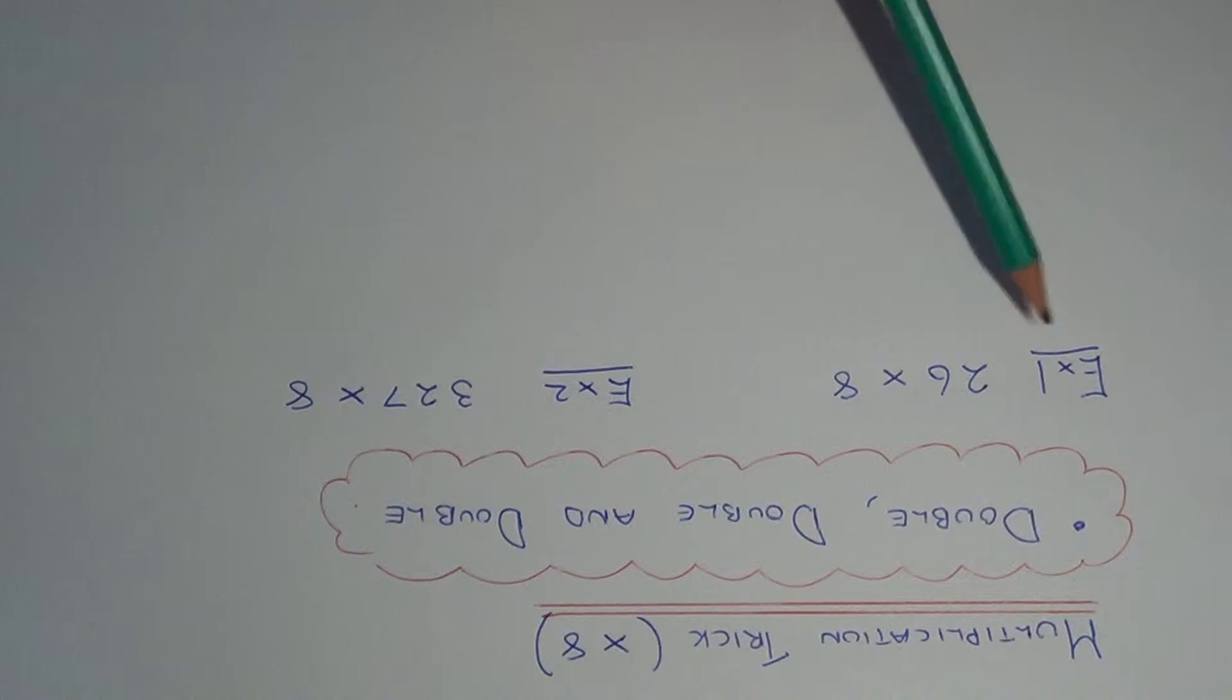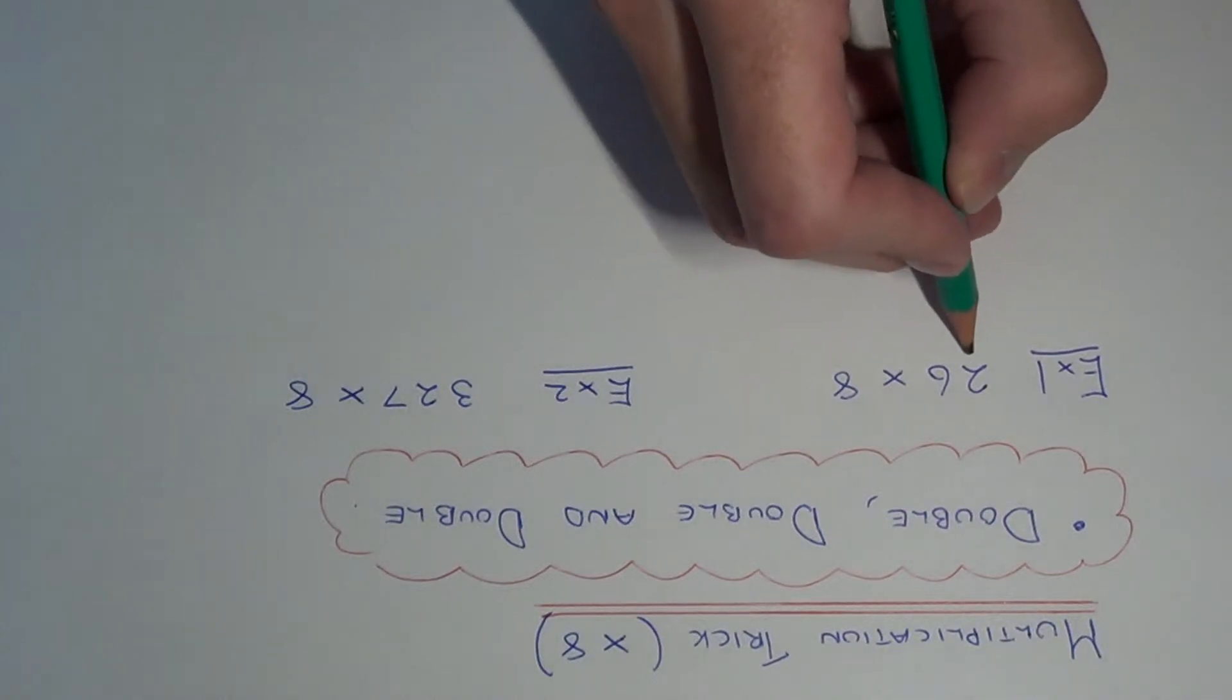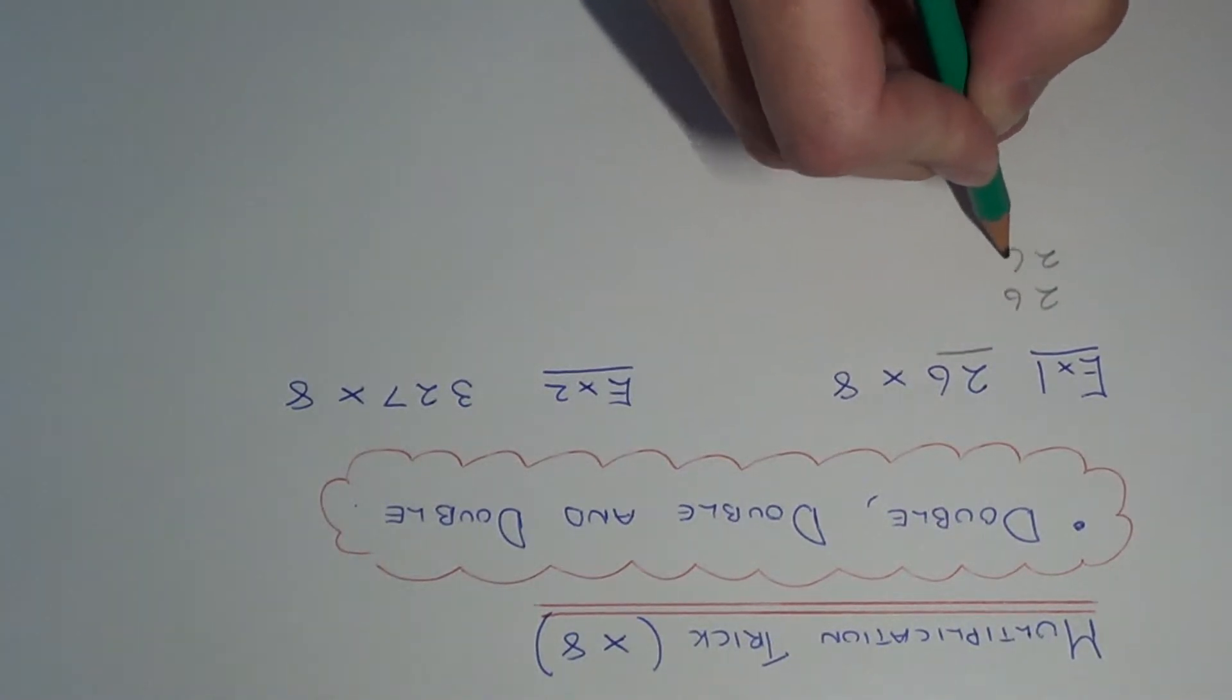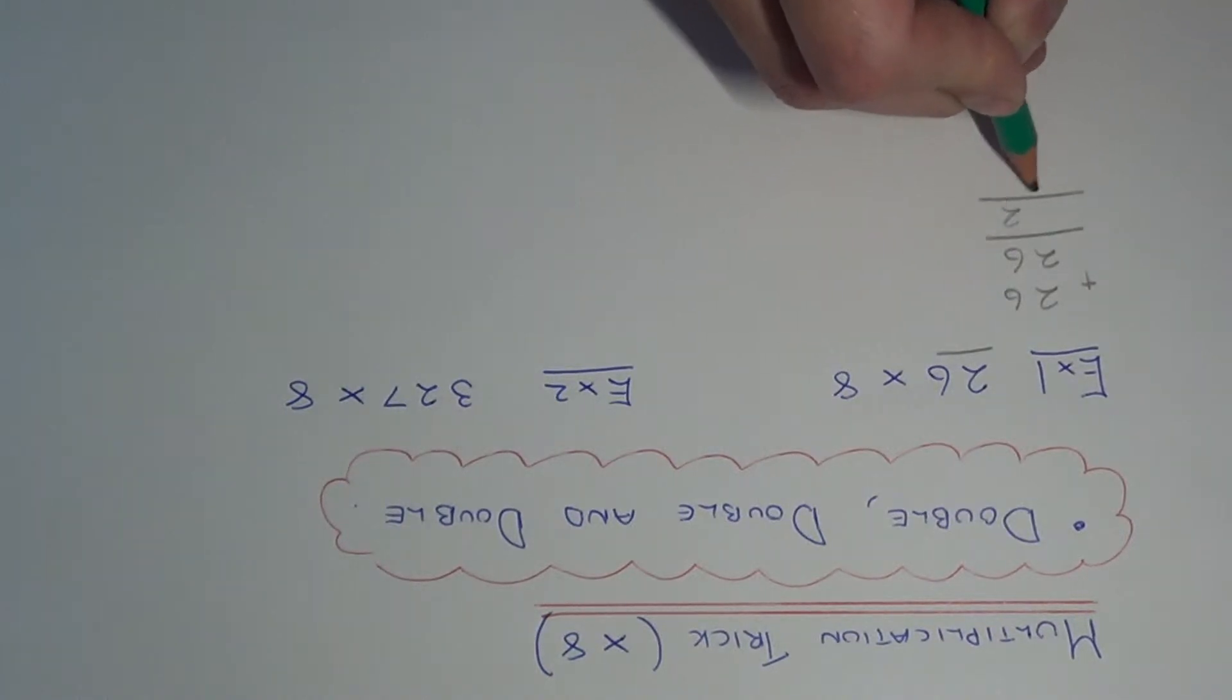Let's have a look at example 1, so we need to work out 26 times 8. Let's begin. We need to double 26, so we need to add this onto itself. 6 add 6 is 12, 2 add 2 is 4 plus the 1 is 5, so we get 52.